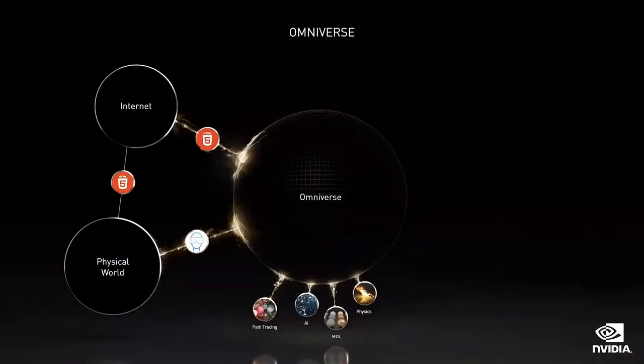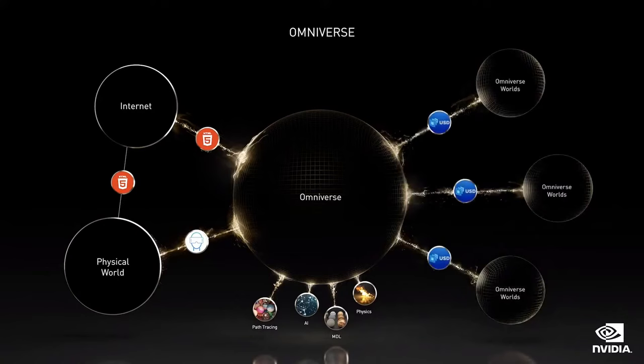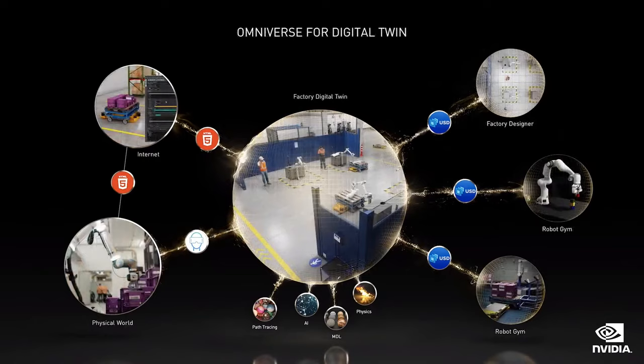Omniverse is very different than a game engine. Omniverse is designed to be data center scale, and hopefully someday, planetary scale. The portal of Omniverse is USD — Universal Scene Description — essentially a digital wormhole that connects people and computers to Omniverse, and for one Omniverse world to connect to another. USD is to Omniverse what HTML is to websites.